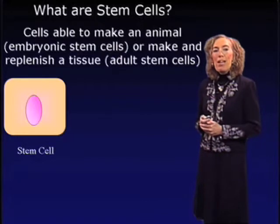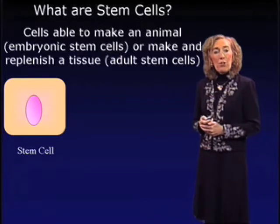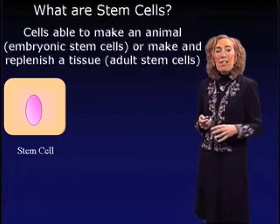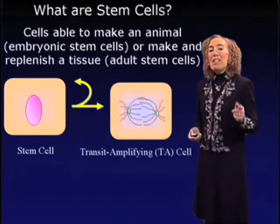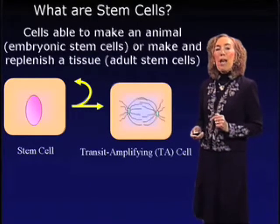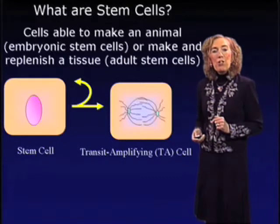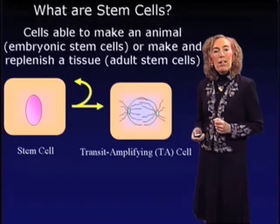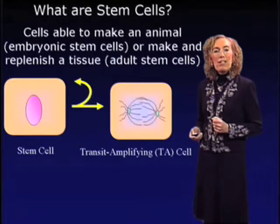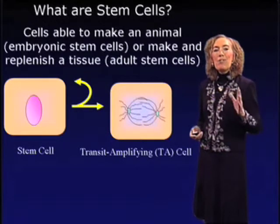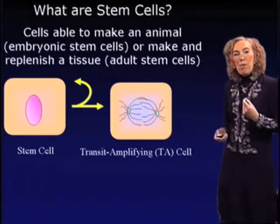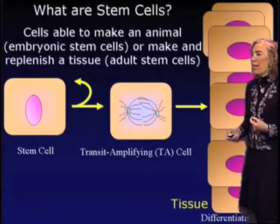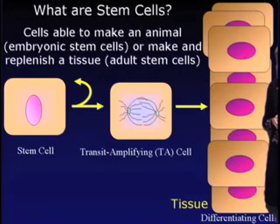Stem cells of the body have the remarkable capacity to undergo a process called self-renewal. These cells are able to divide endlessly to generate self. But they also have the remarkable capacity to divide and generate cells that are very rapidly proliferating, called transit amplifying cells, or TA cells. These cells are in a transition zone, and at some point along the lineage, they will go on to differentiate to create the tissues of the body.